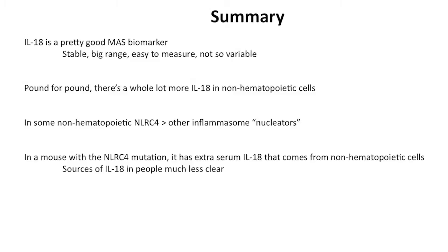To summarize: IL-18 is a pretty good biomarker. It's very stable, has a huge dynamic range in serum or plasma, is pretty easy to measure, and is not particularly variable with disease activity in these patients. Pound for pound, there's a ton more IL-18 in non-hematopoietic cells. In non-hematopoietic cells, NLRC4 is greater than other inflammasome nucleators. It's entirely possible that what we're seeing in IL-18-high patients without an NLRC4 mutation is dysregulation of some non-hematopoietic inflammasome — including NLRP6 or NLRP1 — that we don't have monogenic associations with yet.